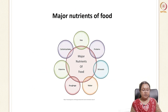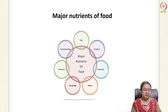Food contains many components. The major components are moisture, proteins, carbohydrates, and fats. We also have micro components like minerals, vitamins, and some roughage, which is contributed by fibers.